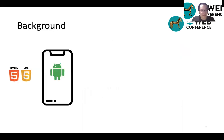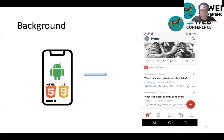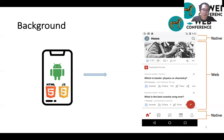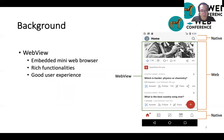Let's begin with some background. Today, we are seeing a trend of tighter integration of mobile applications and web content. Here's an example of such integration. This is a screenshot of the Quora application on Android. The top and bottom parts are native UI components, and the content in the middle is from the Quora web service.